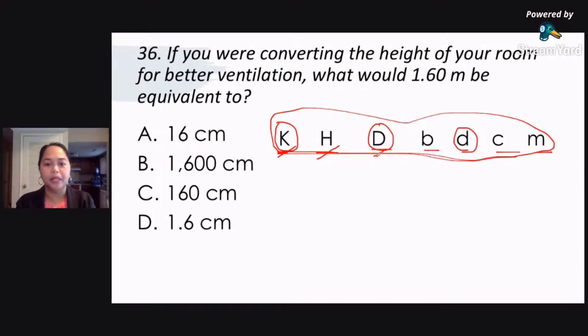The capital letter D is deca. The small letter D is desi. C here would be centi. And M would be mili. So these are all the prefixes in your metric units. Now, B here is the base.